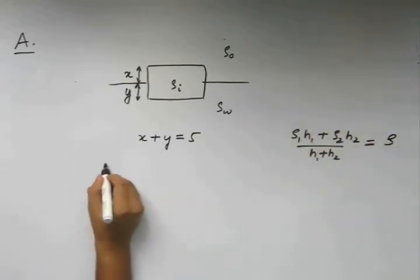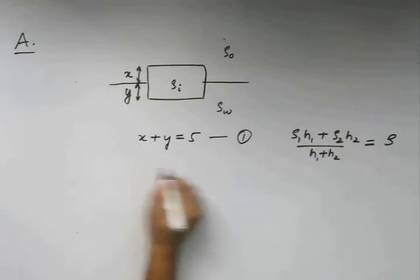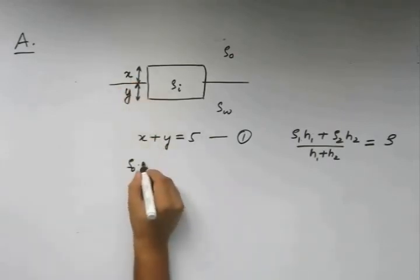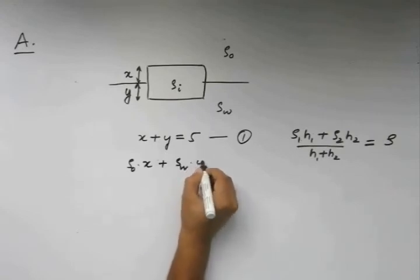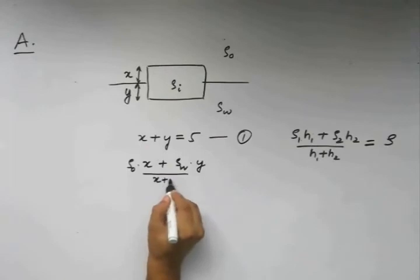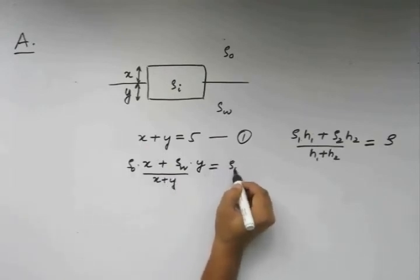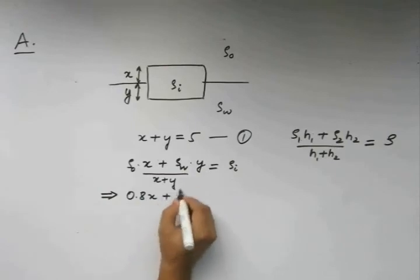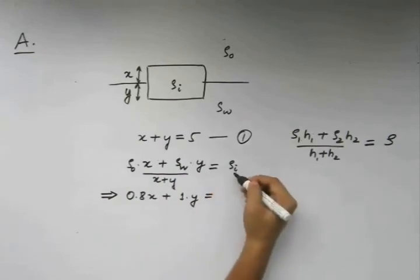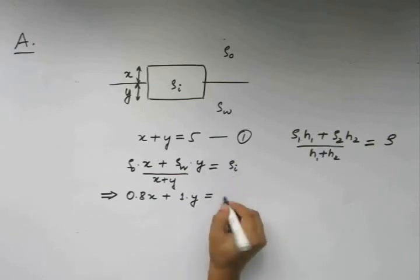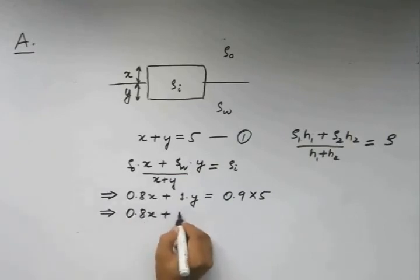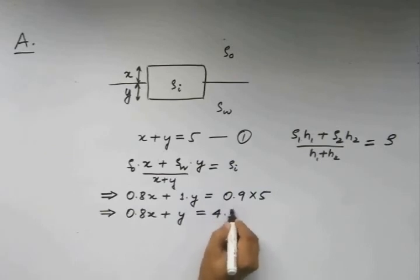Applying this here, we get, this is equation 1. Applying this here, we get rho oil times x plus rho water times y divided by x plus y which is equal to rho ice. This will yield 0.8x plus 1 times y. x plus y is going to be 5. So 5 times rho i and rho i was 0.9. So 0.9 times 5 is going to give 0.8x plus y equals 4.5. This is our equation 2.